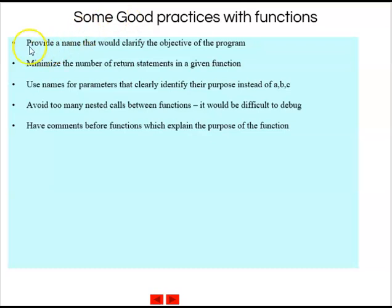Some good practices with functions: provide a name that clarifies the objective — for example, calculate_average rather than a, b, or c. Minimize the number of return statements within a function — a function can have many returns even in the middle, but try to have only one. Use parameter names that are clearly identifying — instead of a, b, c, pass them as science_marks, math, and so on. Avoid too many nested function calls, as a function calling another calling another becomes very difficult to understand. Have comments before functions explaining their purpose so someone else reading it will clearly understand how to use the function.